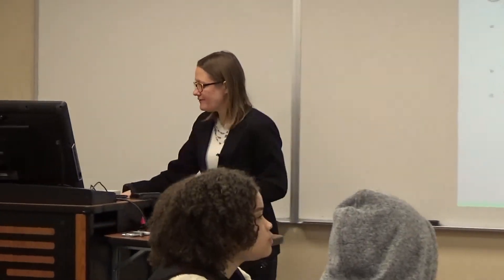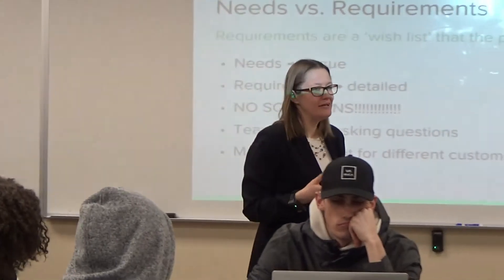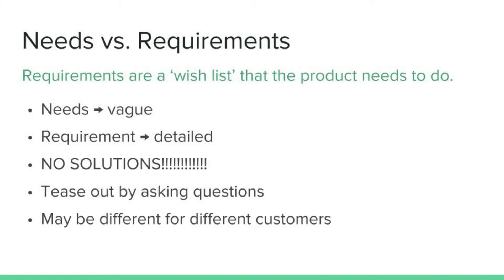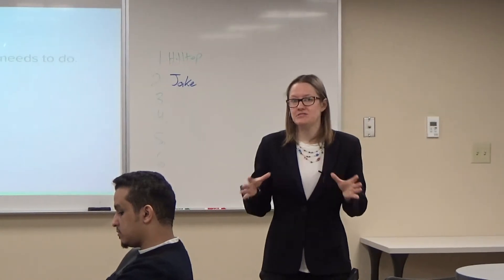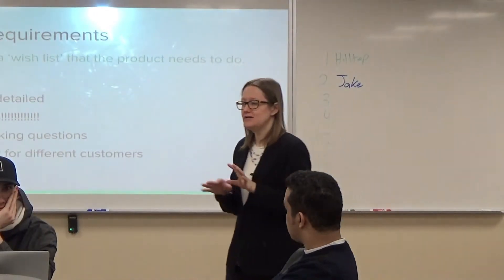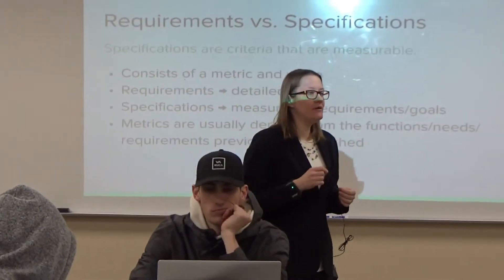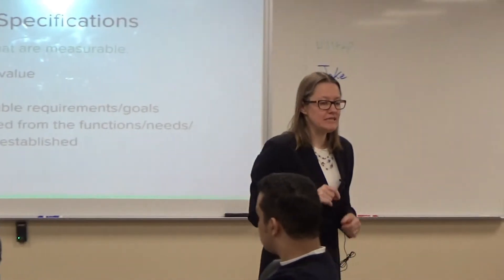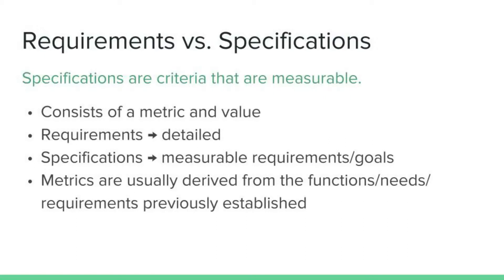It's important to define exactly what the problem is and figure out what stakeholders need. We've already iterated from needs down to requirements down to specifications. Your needs are vague — they have to be interpreted. Your customer can tell you what they want but may not know exactly how to state it, and you'll work on translating what they've said into requirements with more detail, still no solutions. Once you have those requirements, we get into the engineering side where we take requirements and make them measurable.